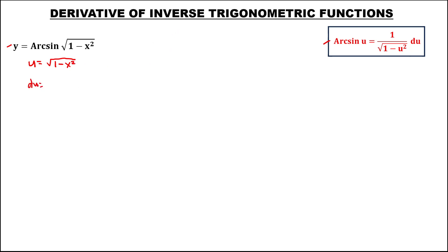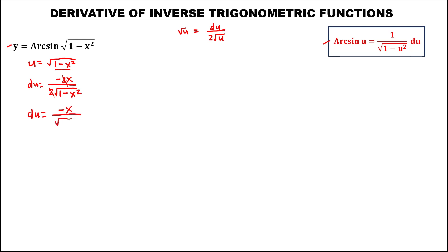To find the derivative of u, using this formula for the square root of u, we have the derivative of u over — just add 2 to the given. So for the square root of 1 minus x squared, since the derivative of 1 minus x squared is negative 2x, then over — just add 2 — copy the square root of 1 minus x squared. Then we can cancel these 2.